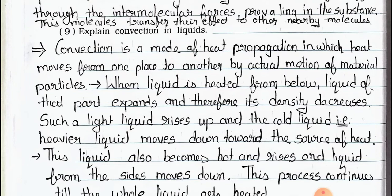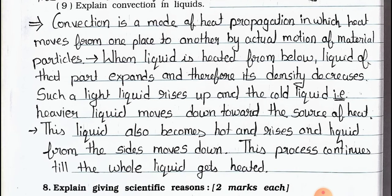Question number 9: Explain convection in liquids. Answer: Convection is a mode of heat propagation in which heat moves from one place to another by actual motion of material particles. When liquid is heated from below, the liquid of that part expands and its density decreases. Such lighter liquid rises up and the cold, heavier liquid moves down toward the source of heat. This liquid also becomes hot and rises, and liquid from the sides moves down. This process continues until the whole liquid gets heated.